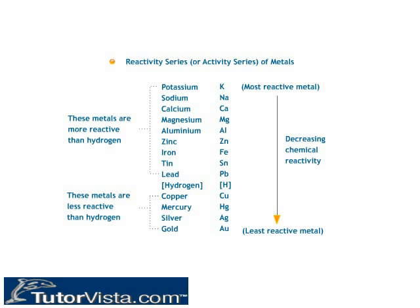From the reactivity series of metals shown here in the table, we can say that metals more reactive than hydrogen are placed above hydrogen, and metals whose reactivity is less than that of hydrogen are placed below hydrogen.